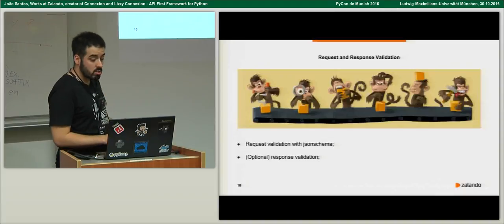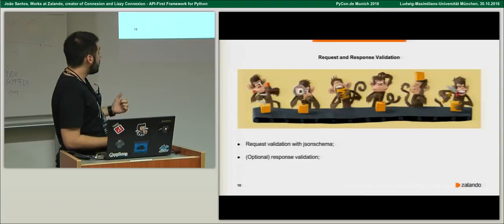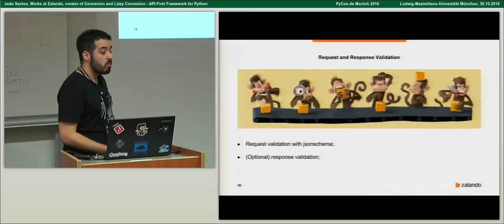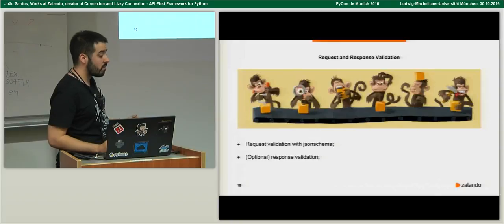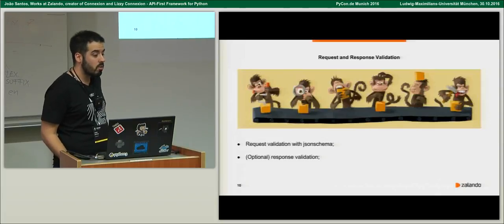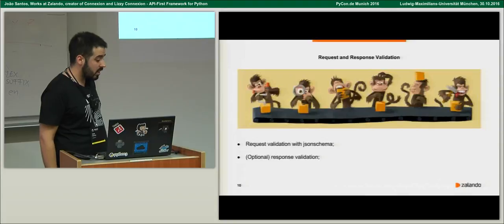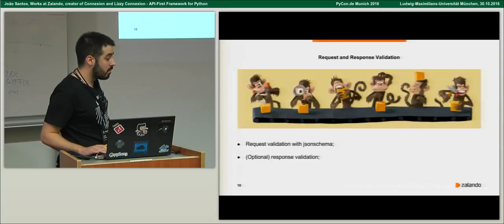For request validation we use JSON schema, which is also how OpenAPI defines what it expects. If you receive a wrong request, Connexion will automatically return a 400 for you, so you know the parameters you get in your functions are correct and have the right types — you don't have to care about this yourself. We also have optional response validation, which is off by default. We only recommend enabling it when debugging because it has overhead, and it's usually better to return something even if not 100% correct and let clients handle it — but during development it prevents you from making mistakes.